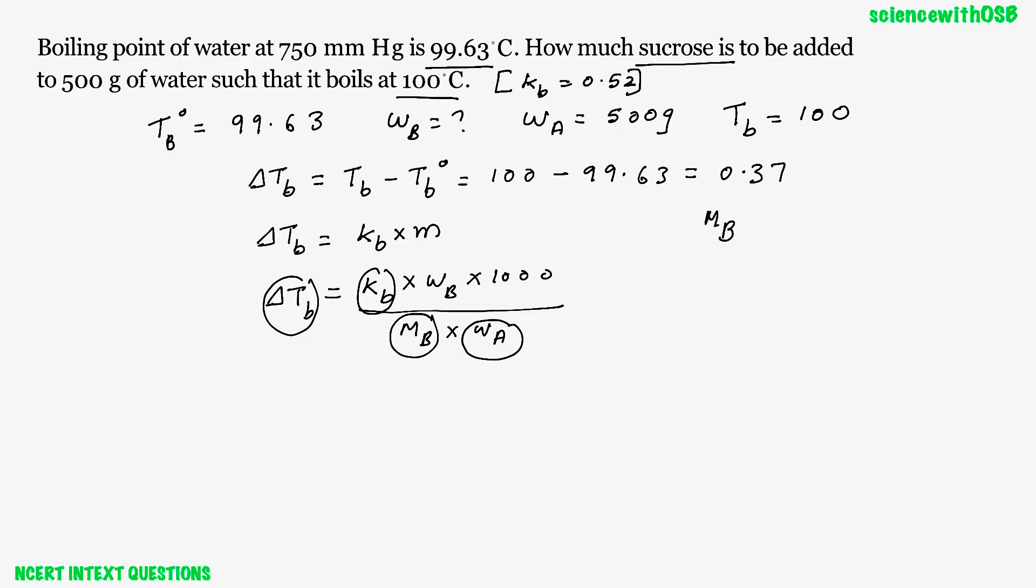Now MB, MB is what? For sucrose, right? For sucrose, what is the molar mass? It is 342. You must know that value. Okay, molar mass of sucrose is 342. By heart that value. In most questions they will give that value. Anyhow, you by heart it. The molar mass of sucrose is 342. So what is the equation for WB? WB is delta TB into MB into WA by